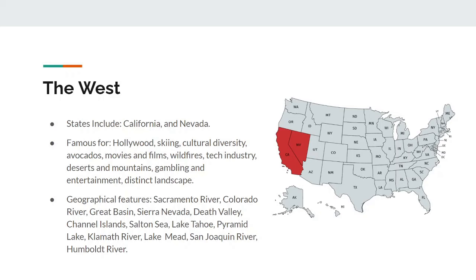Geographical features in this region include the Sacramento River, the Colorado River, the Great Basin, the Sierra Nevada, Death Valley, the Channel Islands, the Salton Sea, Lake Tahoe, Pyramid Lake, Klamath Lake, Lake Mead, the San Joaquin River, and finally the Humboldt River.